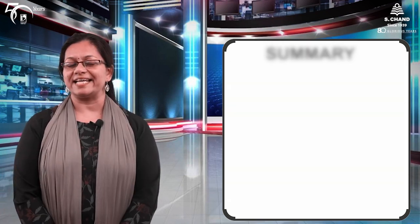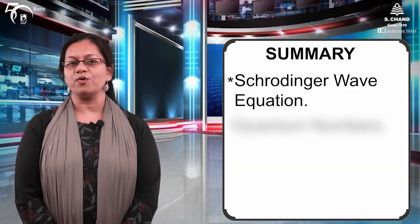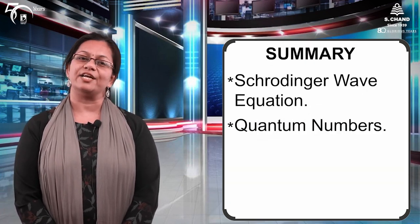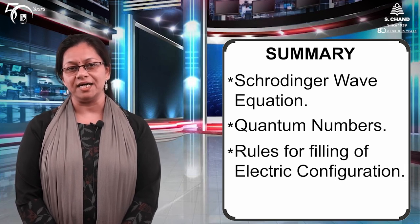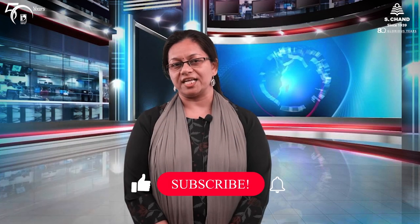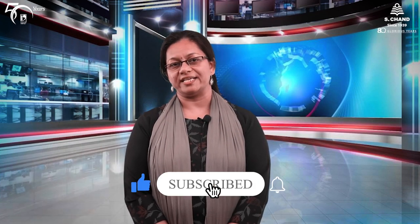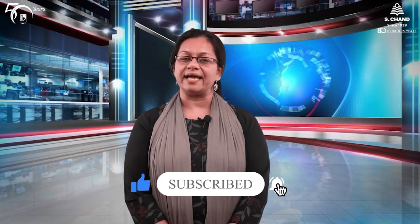Aaj ki class mein humne Schrödinger's wave equation, quantum numbers, and rules for filling of electronic configurations ke baare mein padha. Next class mein we will be starting with bonding — covalent bonding, ionic bonding, and so on. Agar aapko video achha laga, to like, subscribe aur share kijiye, aur bell icon ko dabaana na bhuuliye.